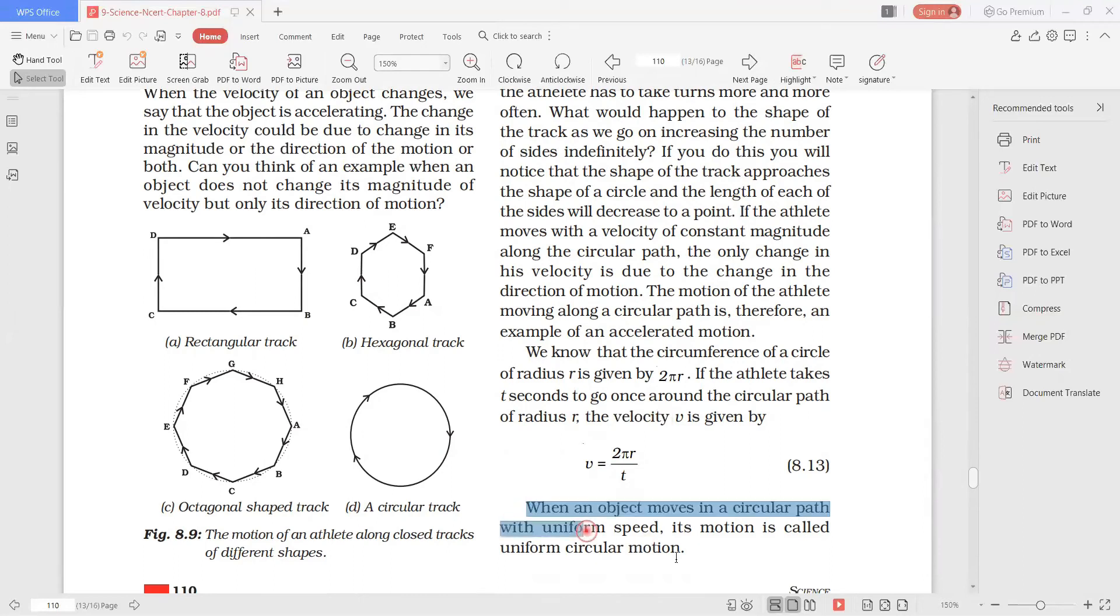So if you look at the definition of uniform circular motion, the proper definition is: when an object moves in a circular path - circular path means where it starts, there is a circle, and the starting point and ending points meet.